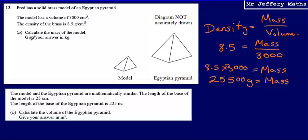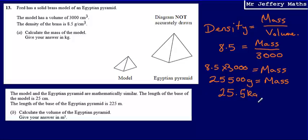The question tells us to give our answer in kilograms. So if it's 25,500 grams, and there are 1,000 grams in every 1 kilogram, that means our final answer is 25.5 kilograms. Final answer for part A: 25.5 kilograms.